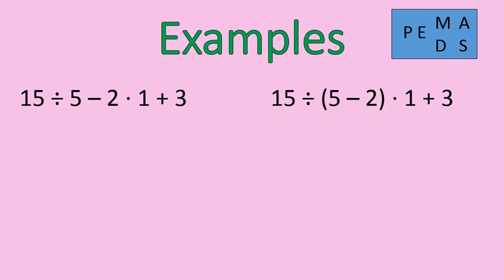All right, let me show you a couple examples here and why the order matters when we're solving things. So in our first example here on the left, we have 15 divided by 5 minus 2 times 1 plus 3. If we're using the correct order of operations, there are no parentheses or exponents in this first expression. So we will move on to doing multiplication and division in the order they appear from left to right. So the first thing we're going to do is 15 divided by 5, which gives us 3.